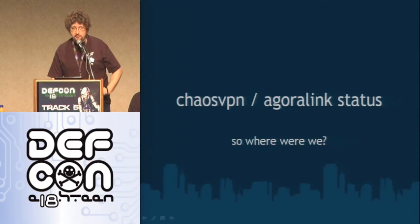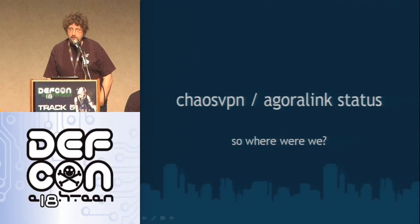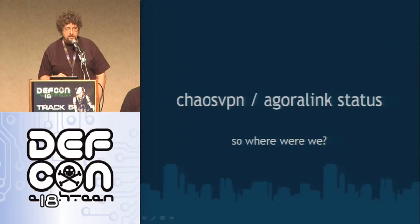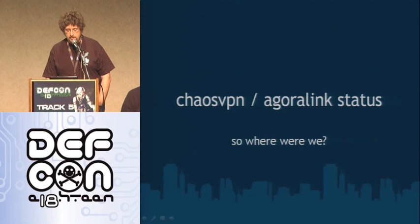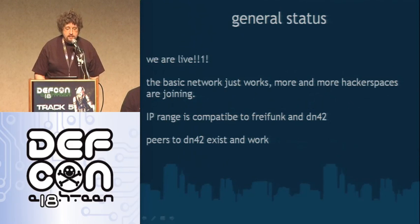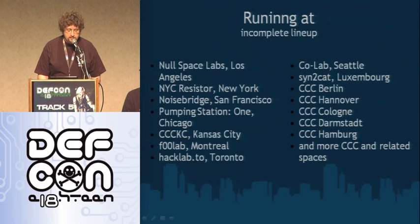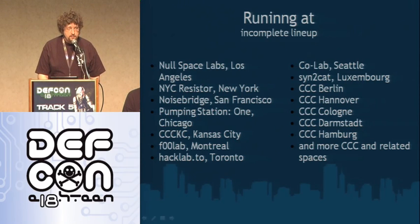I'll briefly explain the general status of Chaos VPN at the moment, and then we'll go over to Warzone, which is the second implementation for playing CTFs. Our original idea was to build a network to play CTFs, but we decided to redo Chaos VPN first — which connects hackerspaces — and you'll see what we use there. It's starting to get used for CTF stuff. General status: the network works, more and more hackerspaces are joining, IP ranges are compatible with some other networks, and there are peers to DN42, which is another VPN. Those are a list of some of the bigger and older hackerspaces involved.